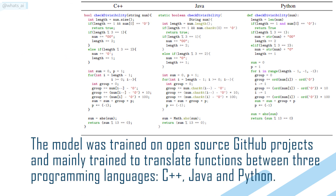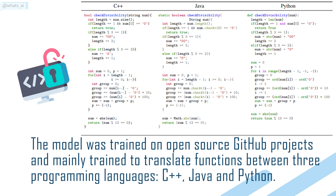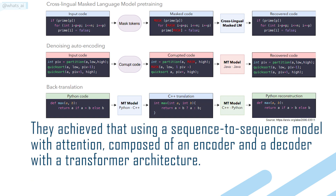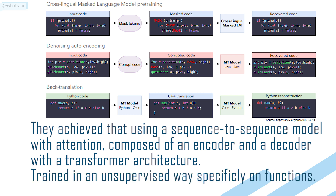The model was trained on open-source GitHub projects and mainly trained to translate functions between three programming languages: C++, Java, and Python. They achieved that using a sequence-to-sequence model with attention, composed of an encoder and a decoder with a transformer architecture, trained in an unsupervised way, specifically on functions.